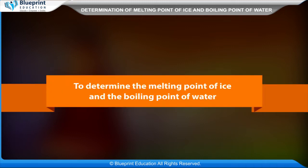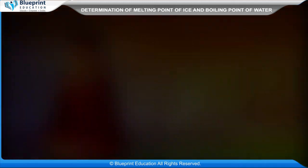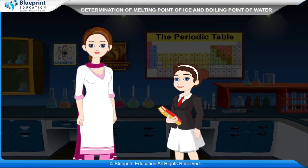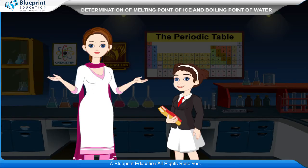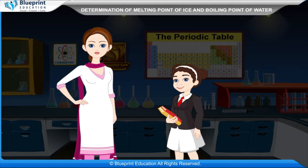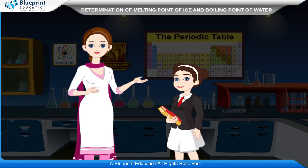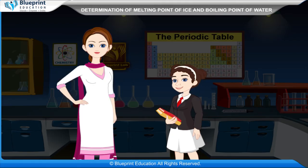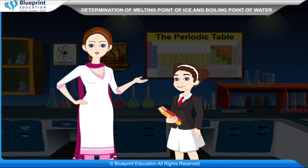To determine the melting point of ice and the boiling point of water. Ice is the solid form of water. The melting point of a solid is the fixed temperature at which a solid changes into its liquid state. Once a solid attains its melting temperature, the temperature remains the same until the entire solid converts to liquid.